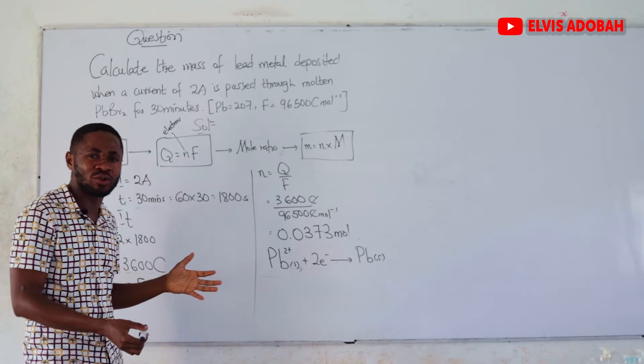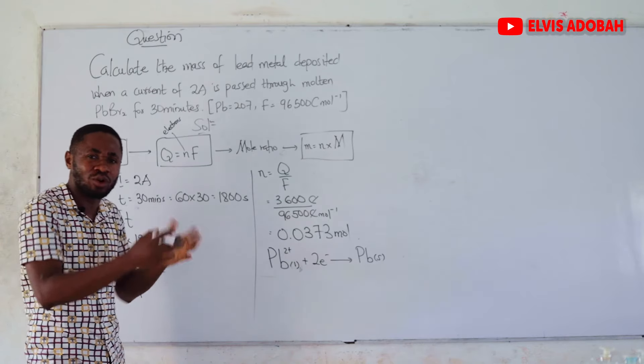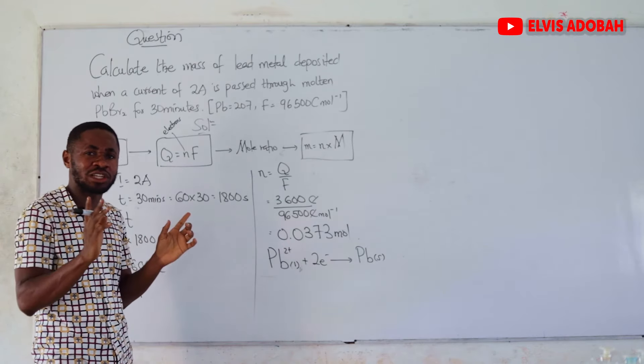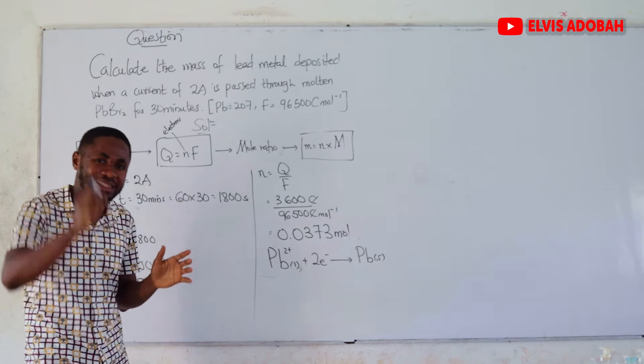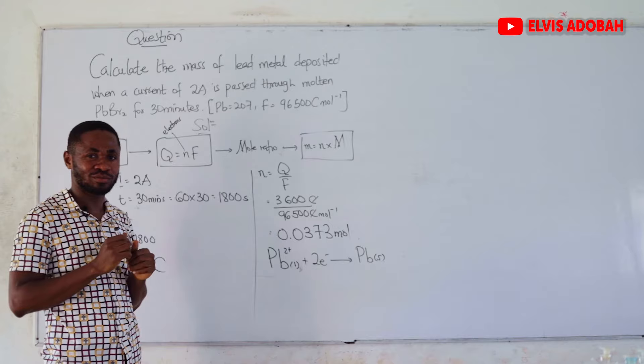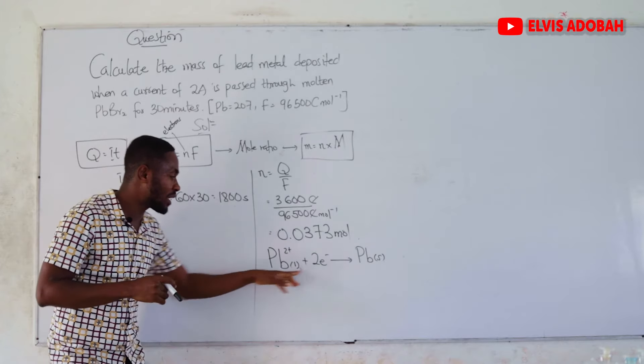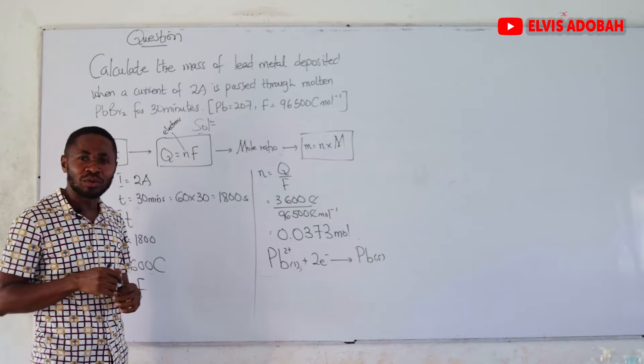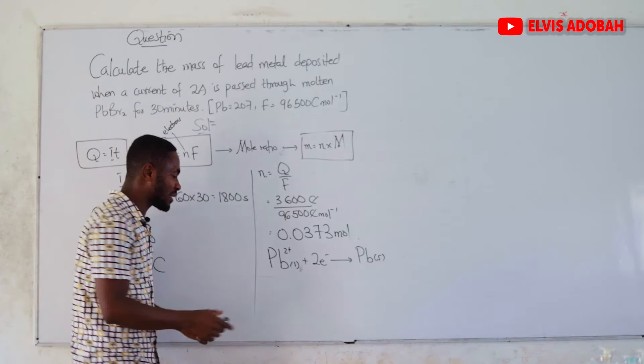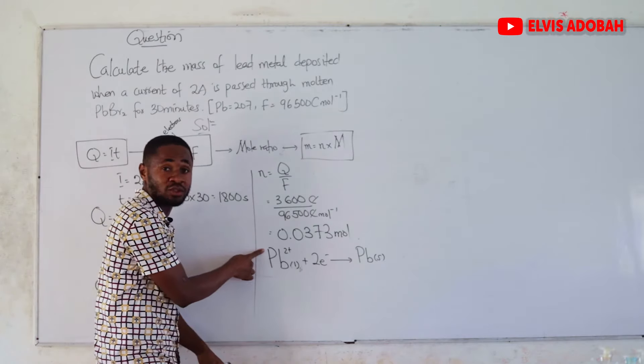If it were to be copper, if it were to be copper sulfate, it would still be Cu2+ plus 3 electrons. If it were to be silver, in silver chloride solution or silver chloride sample, then that one is going to change. Ag+ plus an electron.